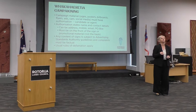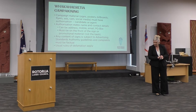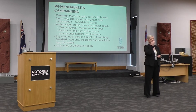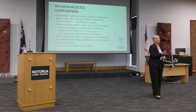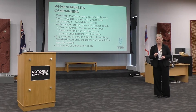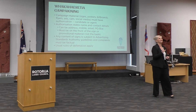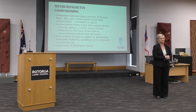All campaigning material — signs, posters, billboards, flyers, ads — must have an authorisation: your name and some contact details. The contact detail can be an address, a mobile number, an email address, or a post office box. The authorisation must be on the front page of any type of campaigning material — you can't hide it on the back of a billboard or pamphlet. The content on your signs is subject to the Advertising Standards Authority guidelines and must be factual. The rules around defamation also apply to information you put on signs.